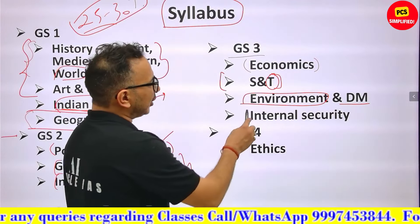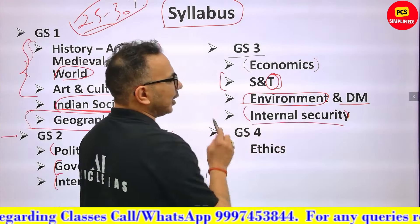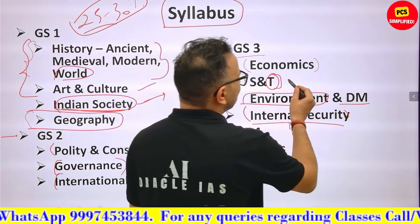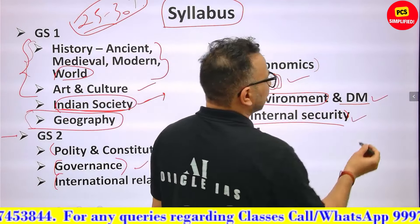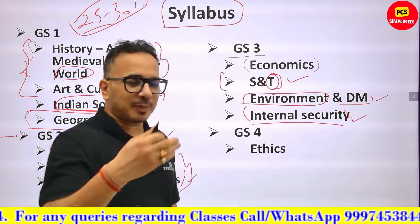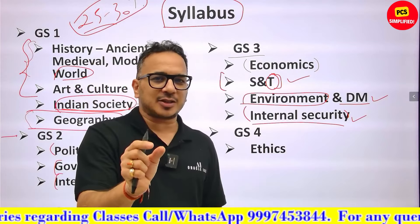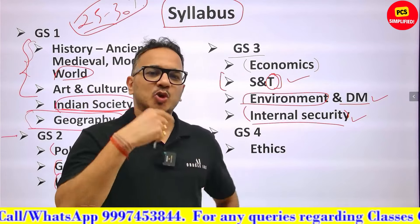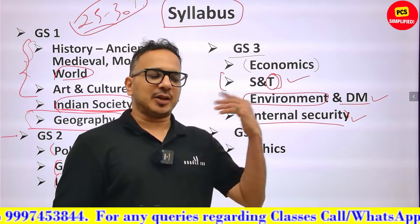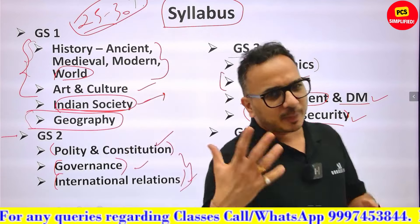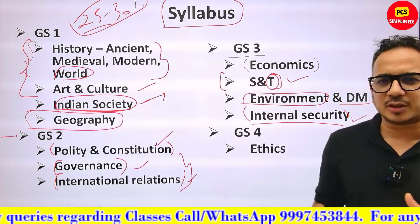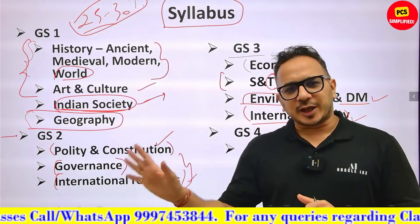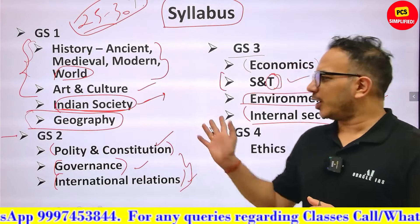Internal security is another new topic. Science and tech, disaster management, and internal security are really small topics. In terms of cost-benefit analysis, the input is low and the output — number of questions expected — is relatively decent. So you can and should cover these topics.